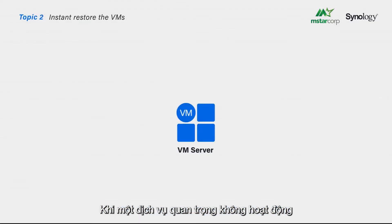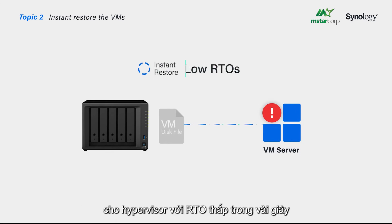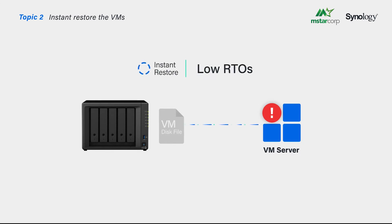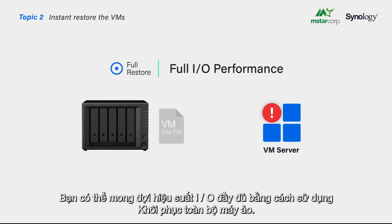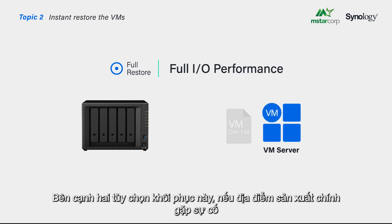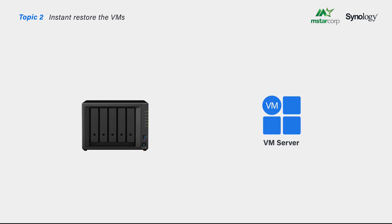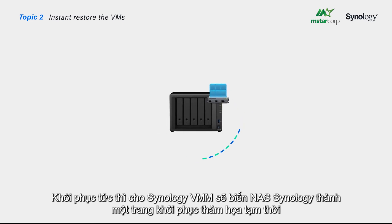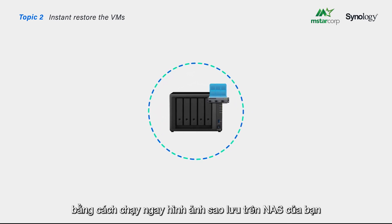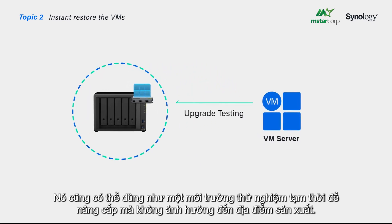When a critical service is down, Instant Restore to Hyper-V makes the NAS a data store for the hypervisor with a low RTO of a few seconds, but the I/O performance might be limited. You can expect full I/O performance using the full virtual machine restore. Besides these two recovery options, if the main production site goes down, Instant Restore to Synology VMM will turn Synology NAS into a temporary disaster recovery site by instantly running the backup image on your NAS. It can also serve as a temporary testing environment for upgrades without affecting the production site.